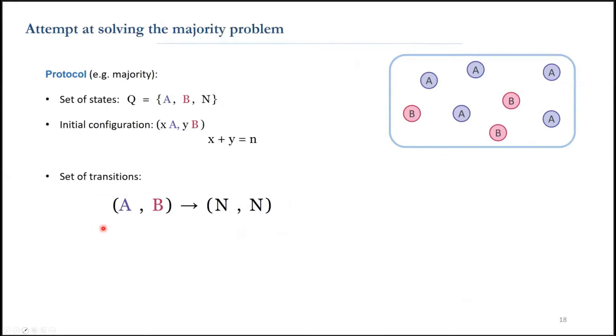Let's try to develop a protocol to solve the majority problem. A natural rule can be if two agents with different opinion interact, both should update to a neutral state.